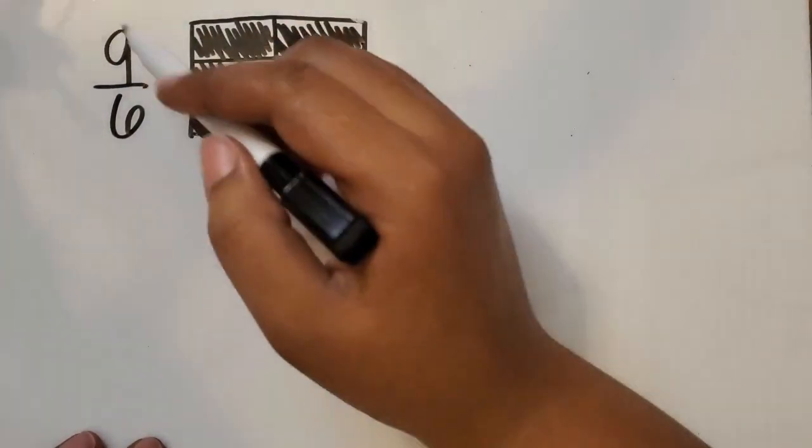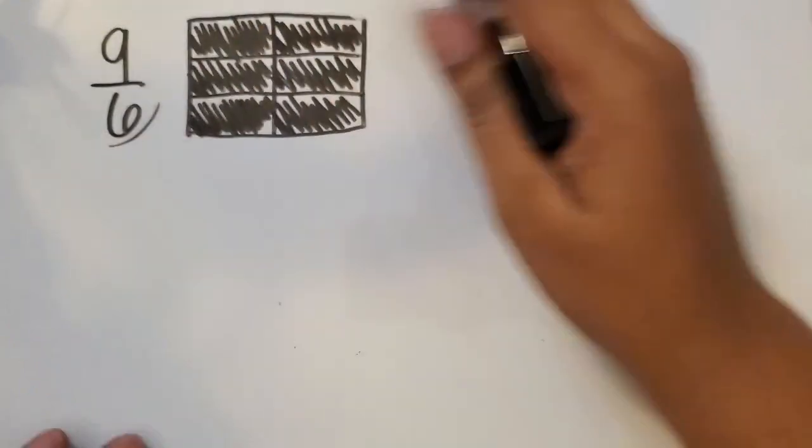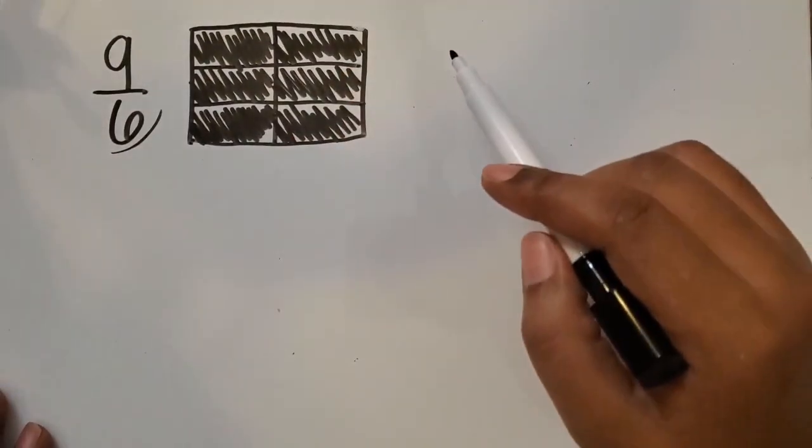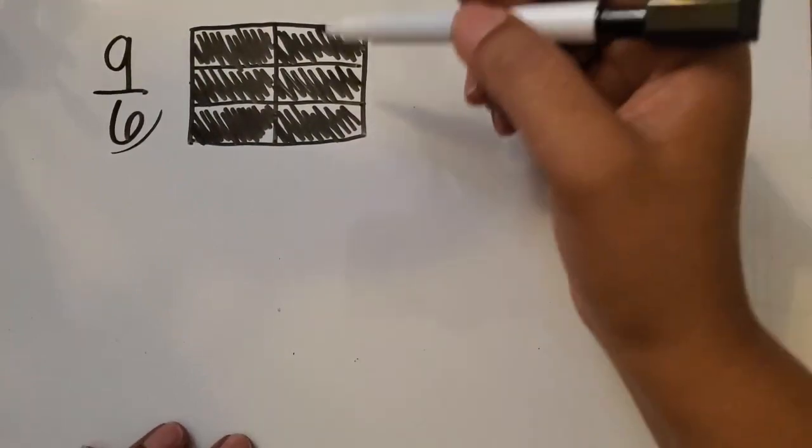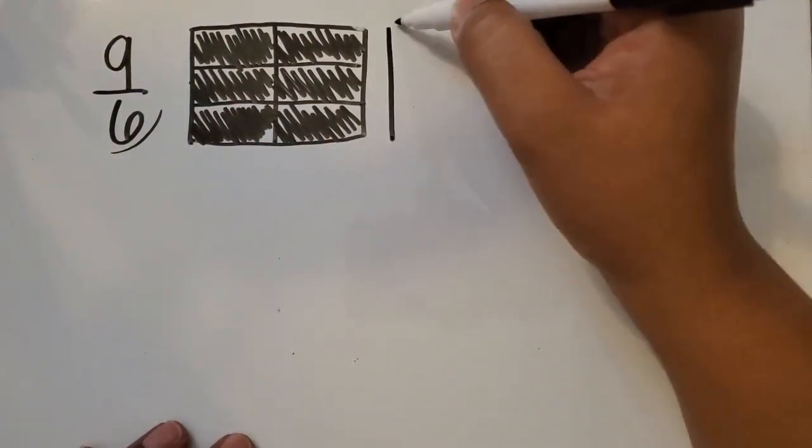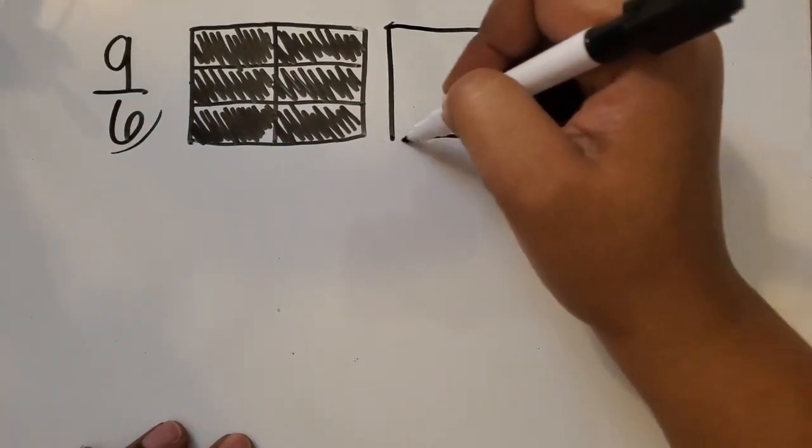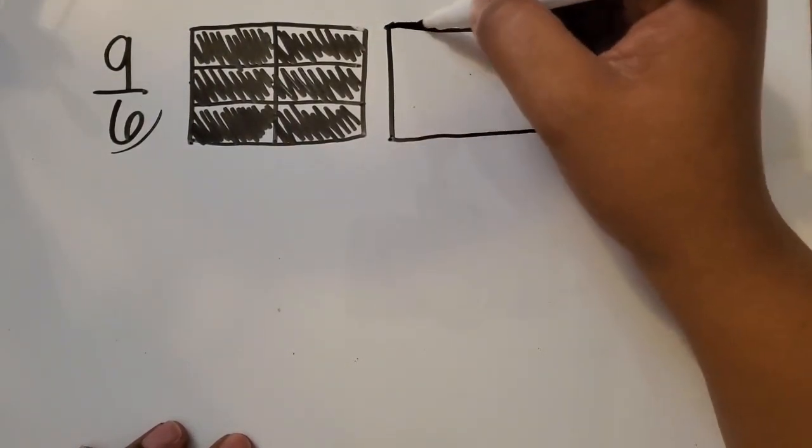But wait, our fraction greater than 1 shows 9/6. So I need to create another whole so that I have enough to show 9/6. And I want my wholes to be the same size, about the same size.